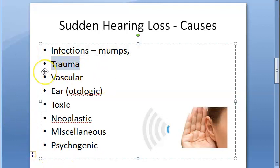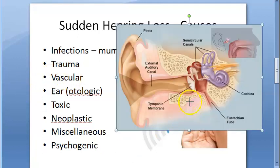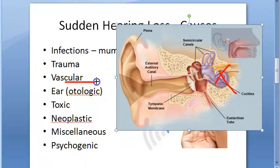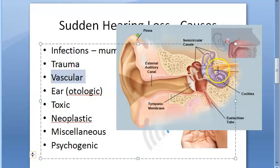Trauma causes include head injury, ear surgeries, noise trauma, barotrauma, and spontaneous rupture of the cochlear membranes — where some membranes inside the cochlea get ruptured.